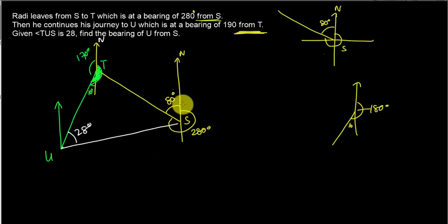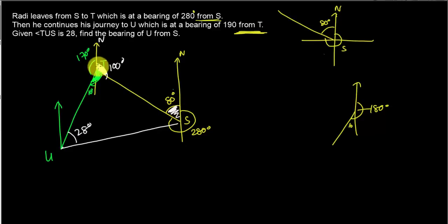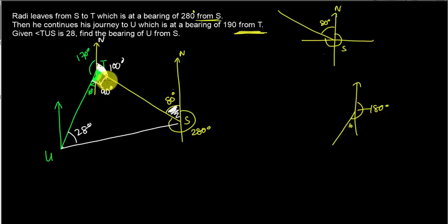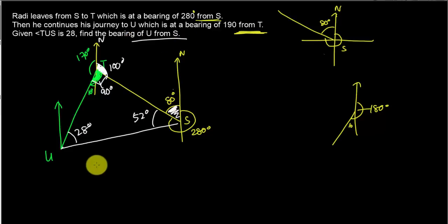Looking at the internal angles: the bearing of 280° from S means there's an 80° angle on one side, and the co-interior angle on the S side of the triangle is 100°. At T, since the bearing to U is 190°, and the angle on one side is 100°, the interior angle of the triangle at T is 190° minus 100° = 90°. So with 90° at T and 28° at U, the angle at S inside the triangle is 180° minus 90° minus 28° = 62°... giving 52°.